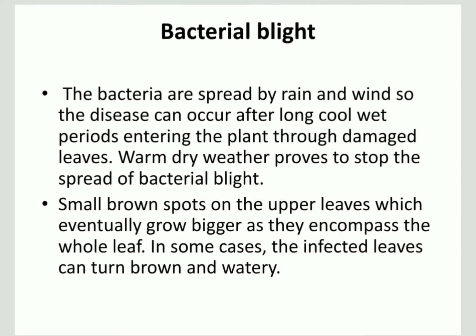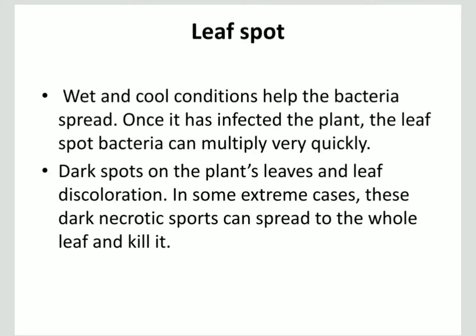Next, coming to bacterial blight. The bacteria are spread by rain and wind. The disease can occur after long cool wet periods, entering the plant through damaged leaves. Warm dry weather tends to stop the spread of bacterial blight. Small brown spots appear on the upper leaves, which eventually grow bigger as they encompass the whole leaf. In some cases, infected leaves can turn brown and spots will appear.